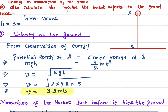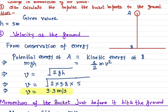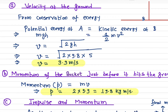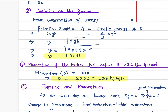The mass cancels out on both sides, so it doesn't matter whether you drop a bucket, a ball, a stone, or a rock — all objects will have exactly the same velocity if dropped from the same height. The velocity at point B is v = √(2gh). With g = 9.8 and h = 5, the velocity works out to 9.9 meters per second.